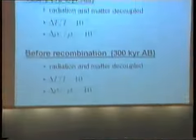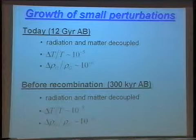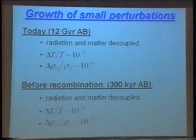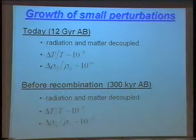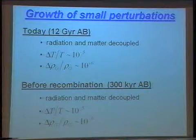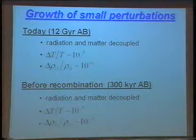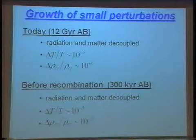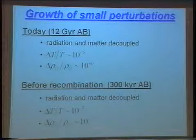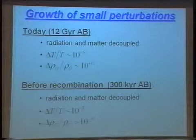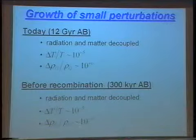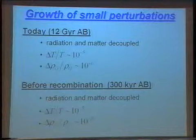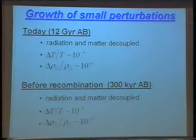So there are large perturbations in the mass density but small perturbations in the temperature. Although today matter and radiation are decoupled, earlier — for the first 300,000 years after the bang — radiation and matter were coupled. By probing the microwave background radiation, we're probing the universe when radiation and matter were tightly coupled. The temperature perturbations of order 10 to the minus 5 tell us that density perturbations at the time of recombination were also 10 to the minus 5. So 300,000 years after the bang there were small perturbations; today the perturbations are large. The growth we see comes from gravitational instability of small perturbations.